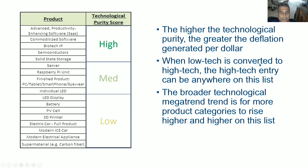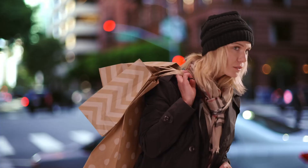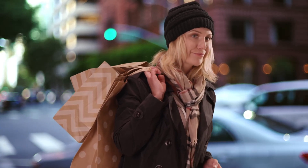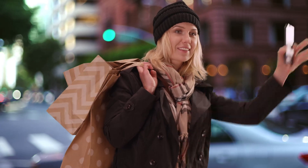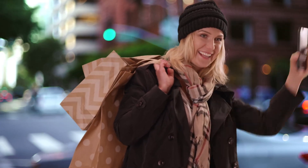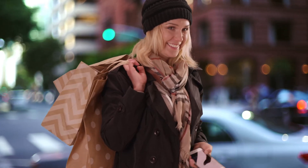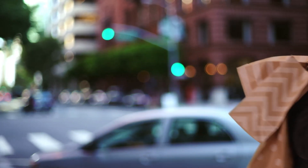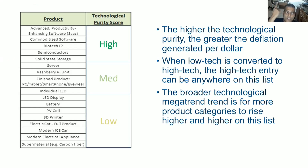When low-tech is converted to high-tech, the high-tech entry can be anywhere on this list. Just because low-tech got converted to high-tech — such as an incandescent bulb going to an LED bulb, or taxis being replaced by ride-sharing services such as Uber and Lyft — doesn't mean it starts at the bottom. It could come in the middle as well, based on the extent of the disruption that has occurred. That is a function of how overdue the disruption was. For example, if you want to see a discussion of that as it relates to taxi medallions and ride-sharing services like Uber, watch the video up here.